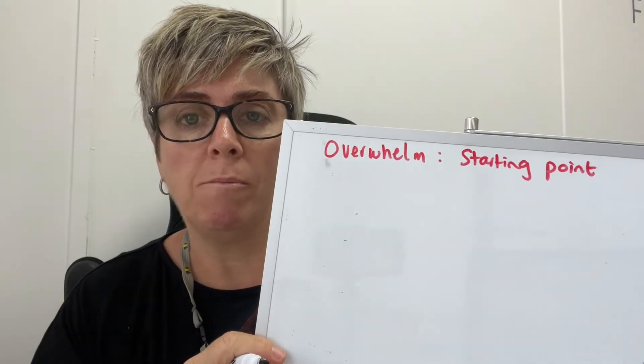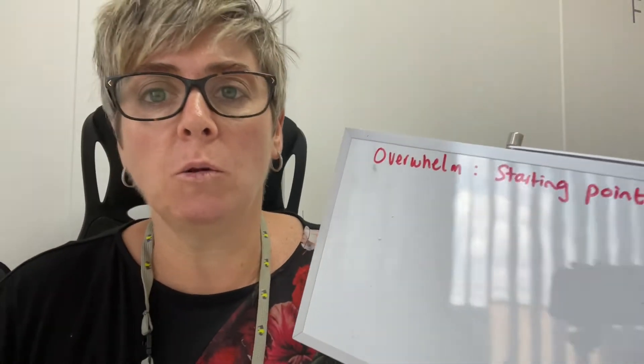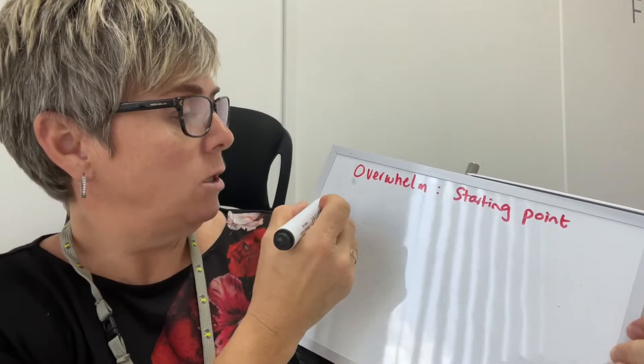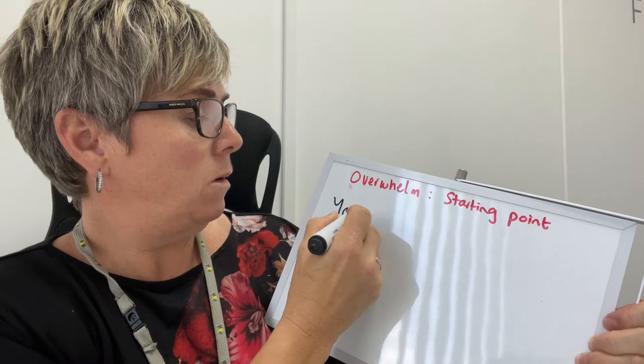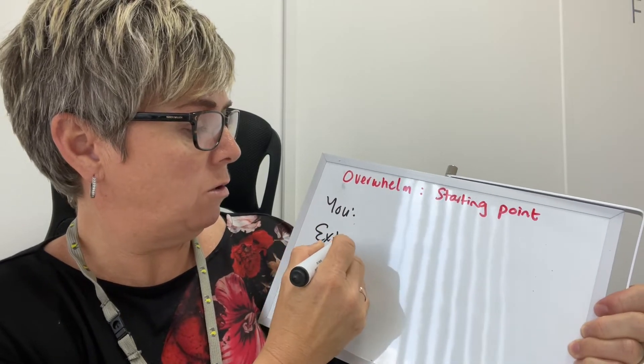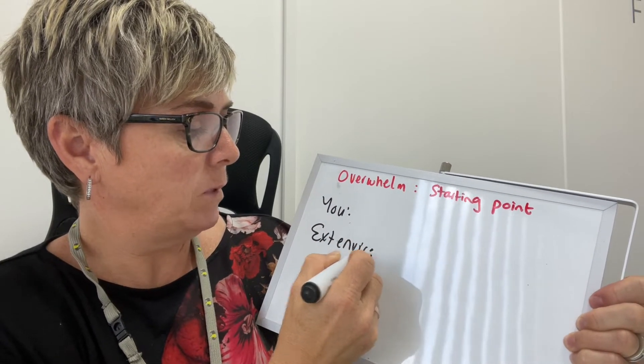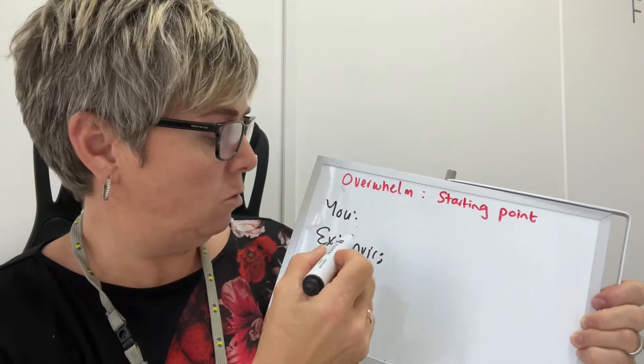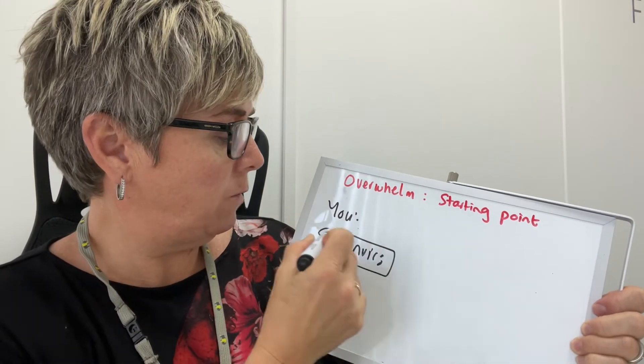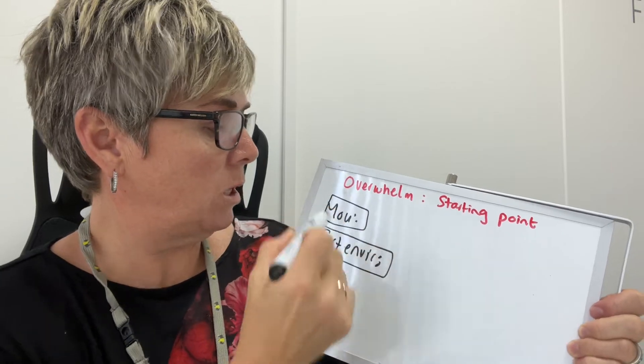So overwhelm starts like this and I'm going to put it on my little board so I can teach through this. There's two areas to consider: it's you and it's your external environment. We cannot control our external environment, we can only control us.